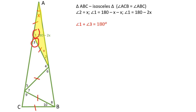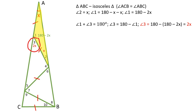Angle 1 plus angle 3 is equal to 180 degrees because these two angles form a linear pair of angles. Therefore, angle 3 is equal to 180 minus angle 1, which is 2X.